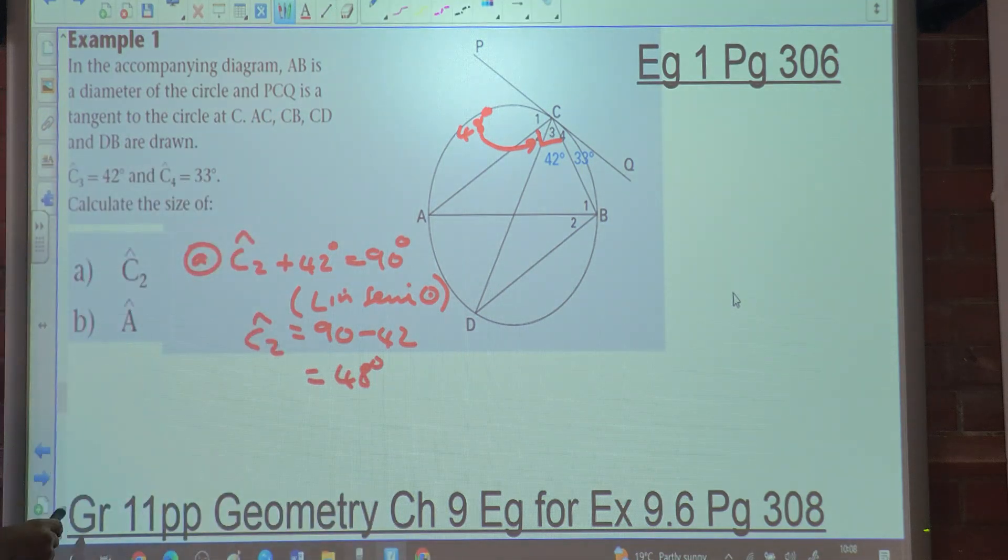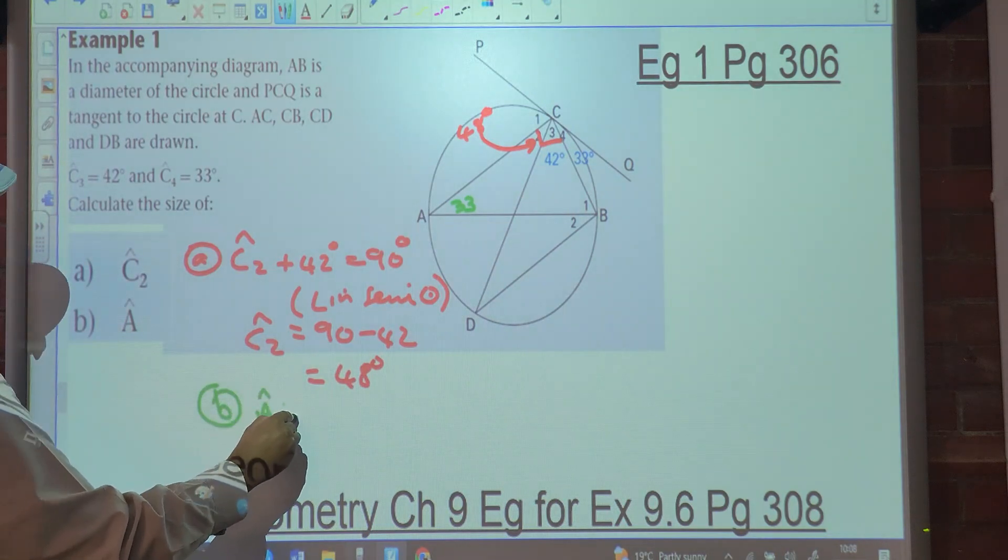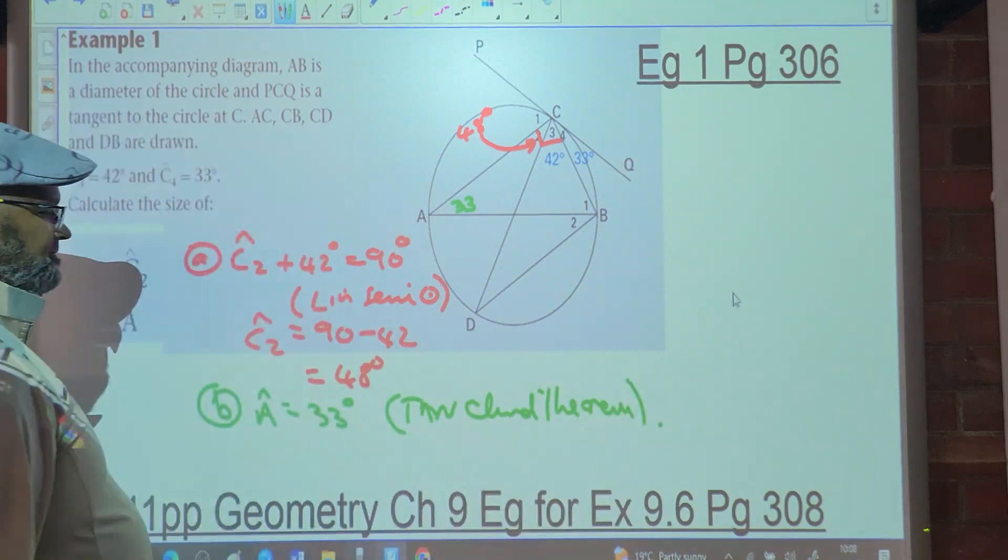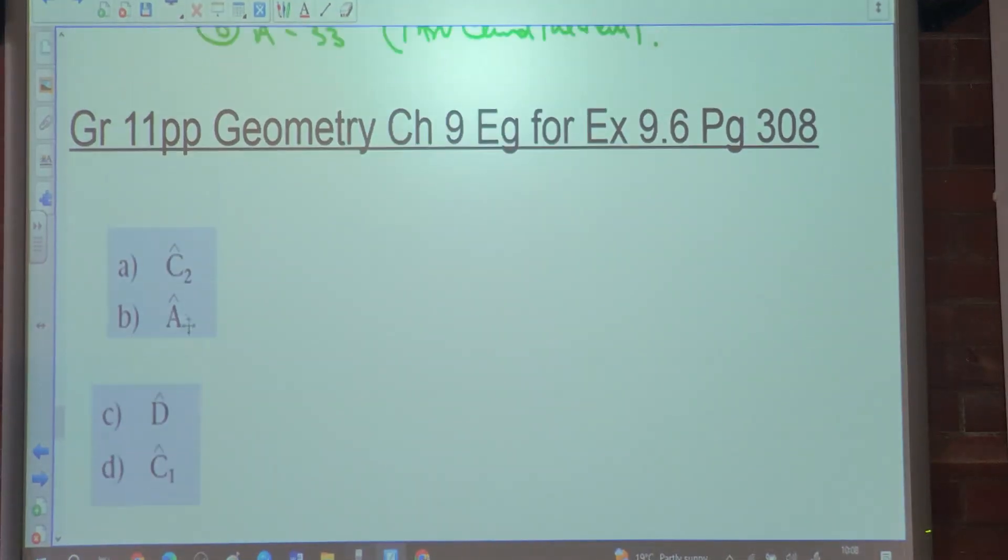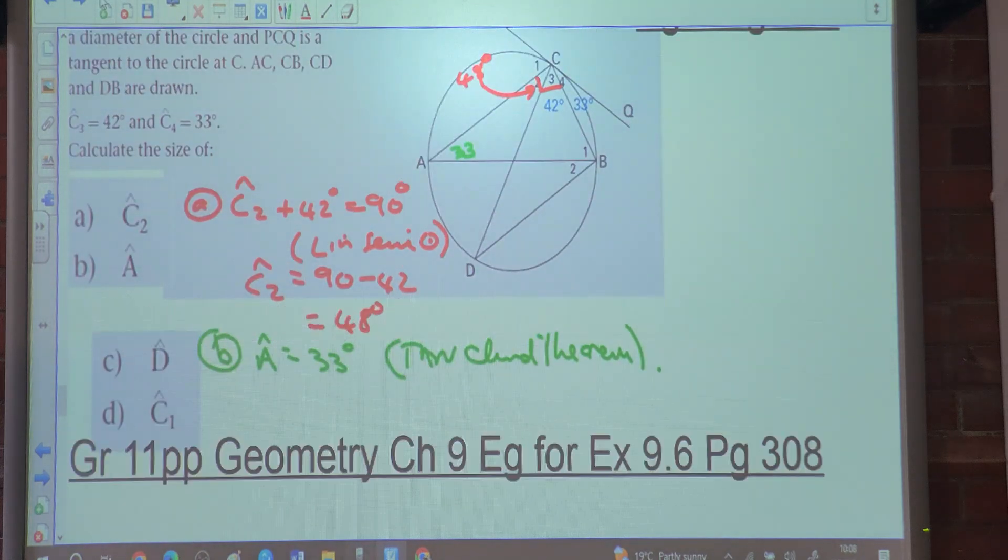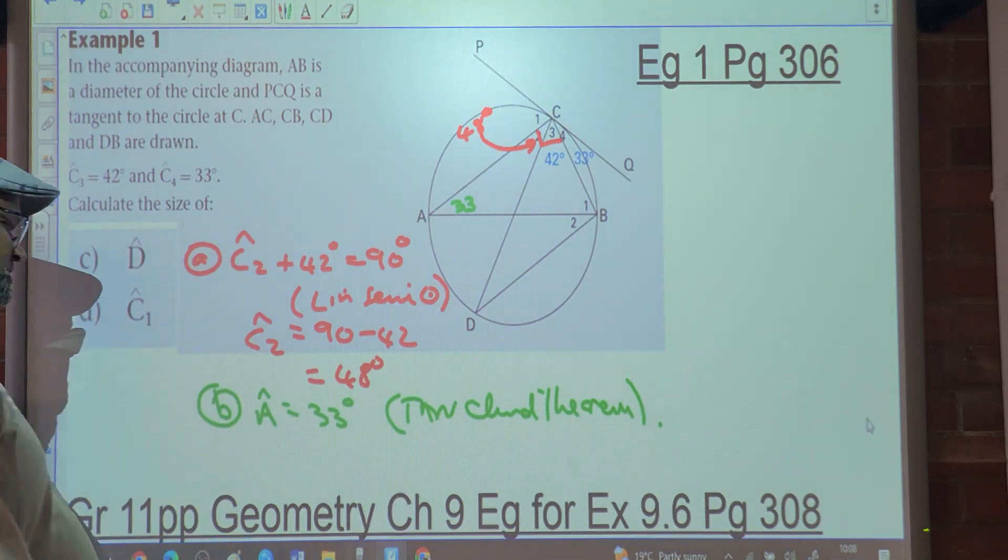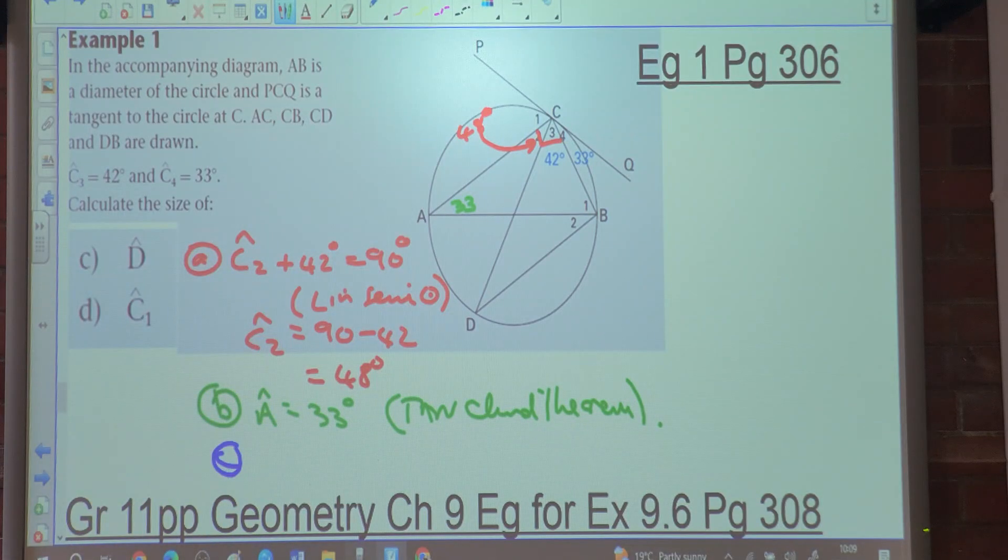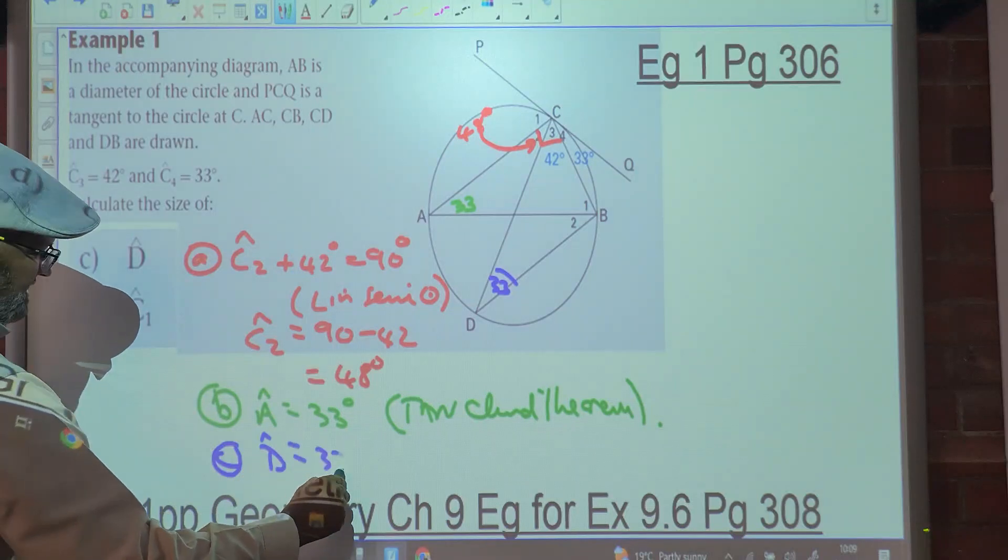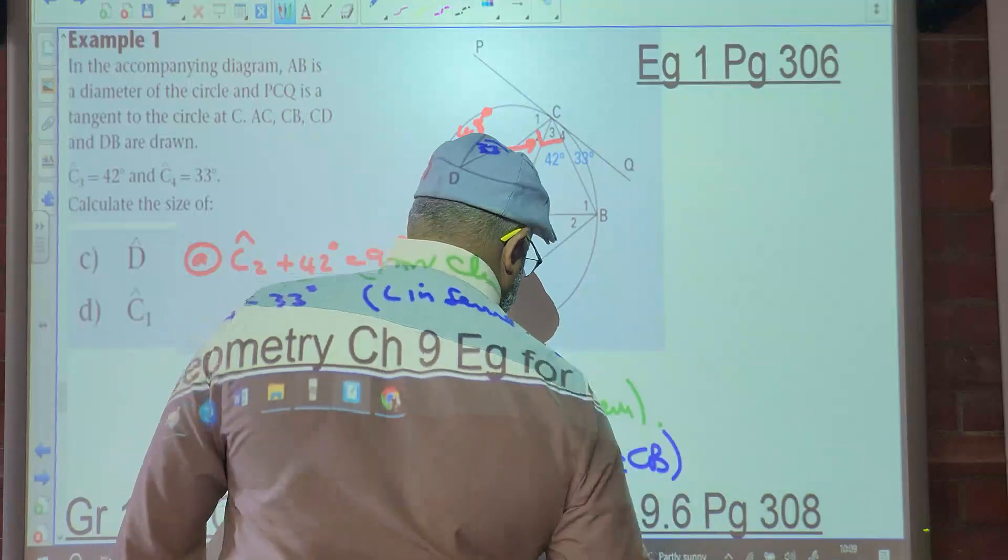Let's look at B. B wants angle A. And we spoke about angle A already. So angle A is 33 degrees. Why is angle A 33 degrees? Tangent chord theorem. Let's look at angle D and angle C. Are you going to calculate D? Angle D is the same, same segment or tangent chord theorem. So D is 33 degrees, angles in same segment, and it's coming from arc AC.